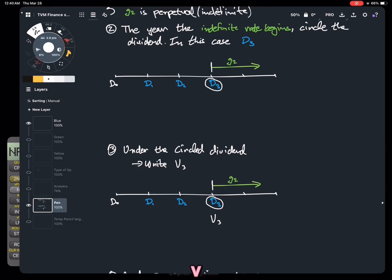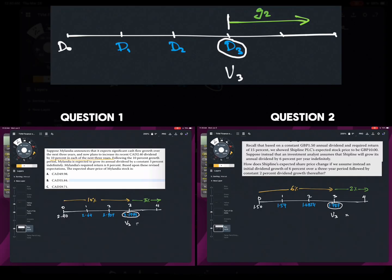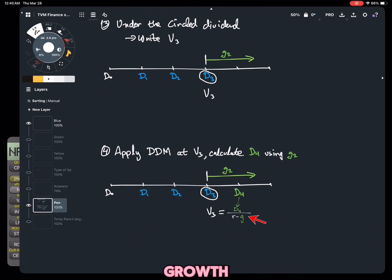Next step, just write V under the dividend circle. For V, we simply use the Gordon Growth Model.